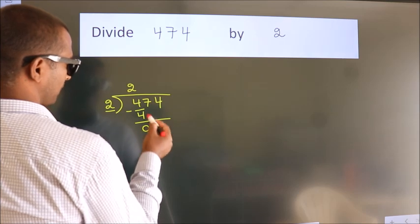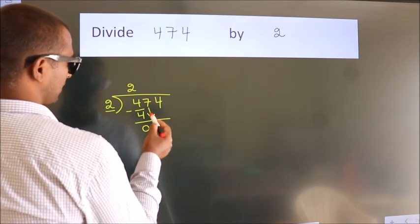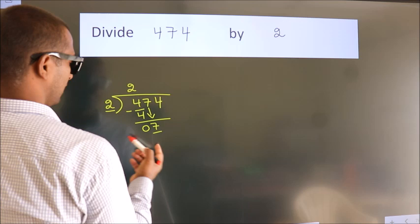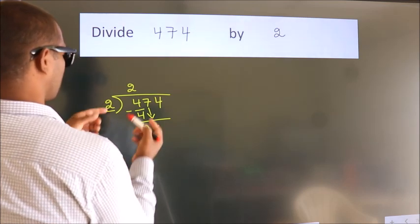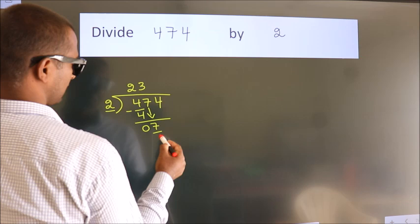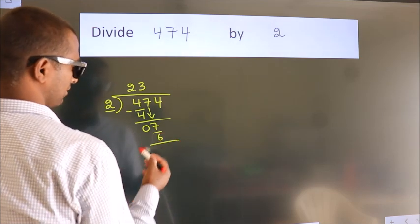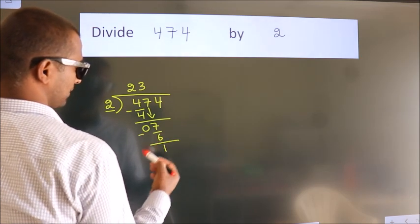After this, bring down the beside number. So 7 down. A number close to 7 in 2 table is 2 3s, 6. Now we subtract. We get 1.